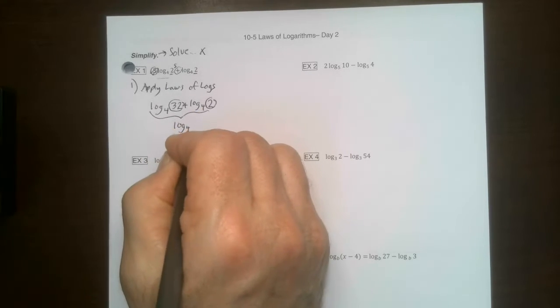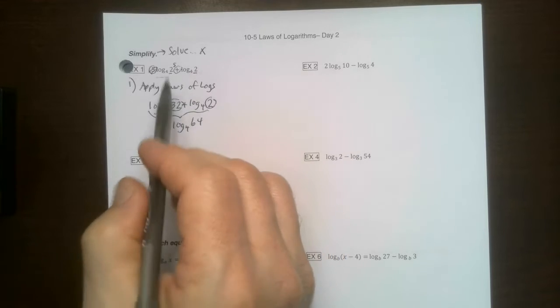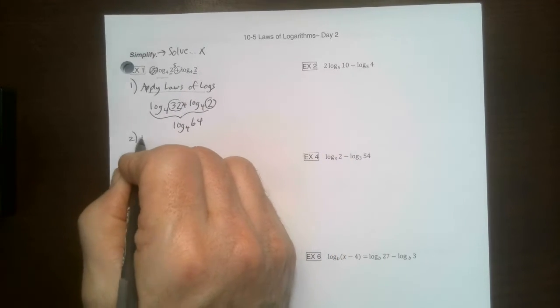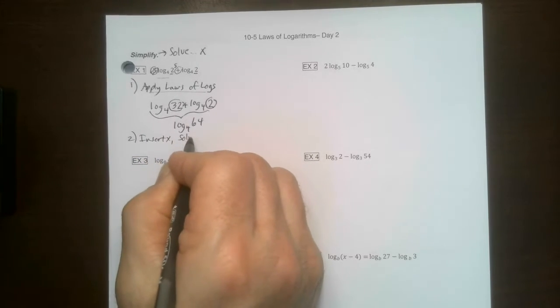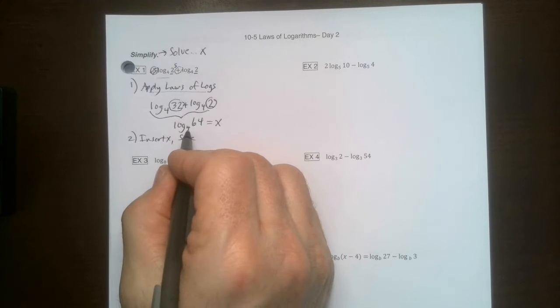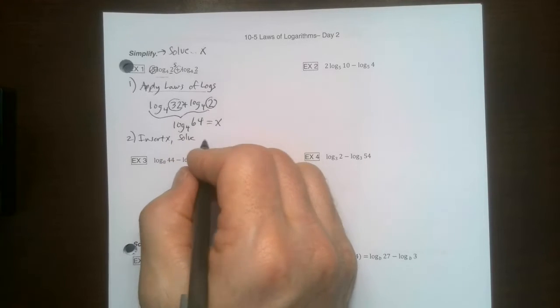The 2 shall become 1 by multiplying these two together. So I get log base 4, 64. But we're not done yet. All we did was apply the laws of logs. So the next thing we need to do is insert X and then solve. So this is equals X. So now this turns into, this is a logarithmic equation.